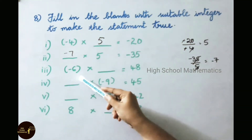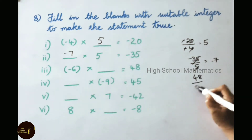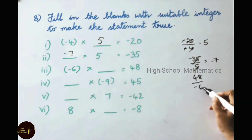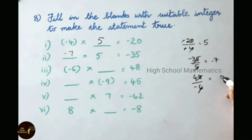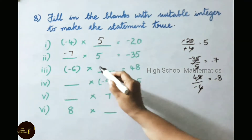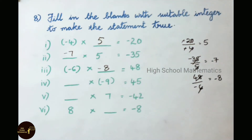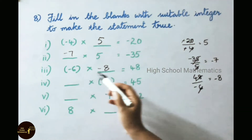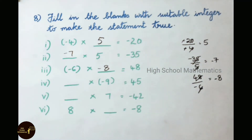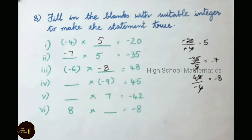Third one: minus 6 into blank equals 48. Let us divide 48 by minus 6. Six times table: 48 is 8 times. Keep the minus sign, so write down minus 8 in the blank. Minus 6 into minus 8 equals 48, since minus into minus gives plus.